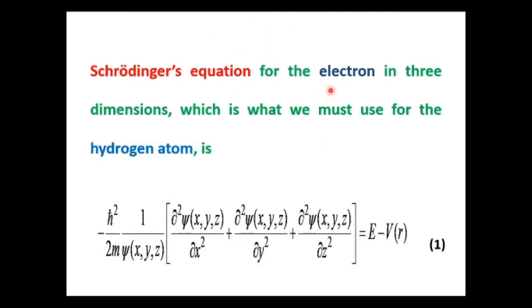We have Schrödinger's time-independent or steady-state equation: minus h-cross squared by 2m, del squared psi, is equal to E minus V into psi, where psi is the wave function.